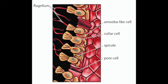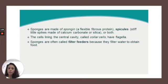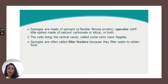And then you have a spicule. Spicules are sharp rods that comprise the sponge's exoskeleton. Sponges are made of spongin, a flexible, fibrous protein, and also spicules, which are stiff, little spikes made of calcium carbonate or silica, or both.